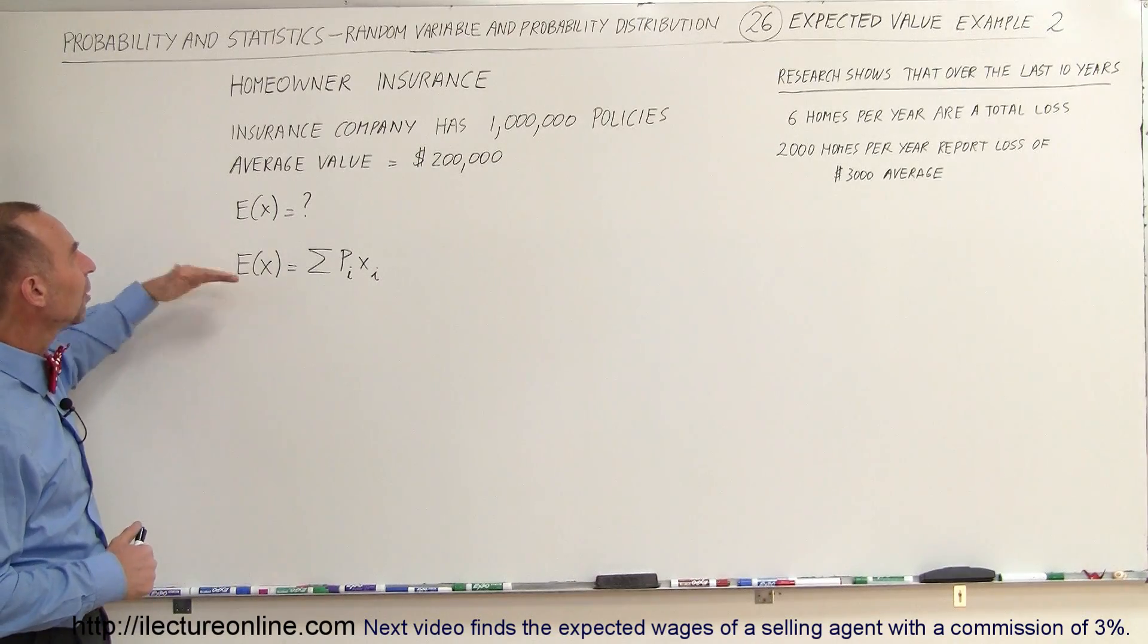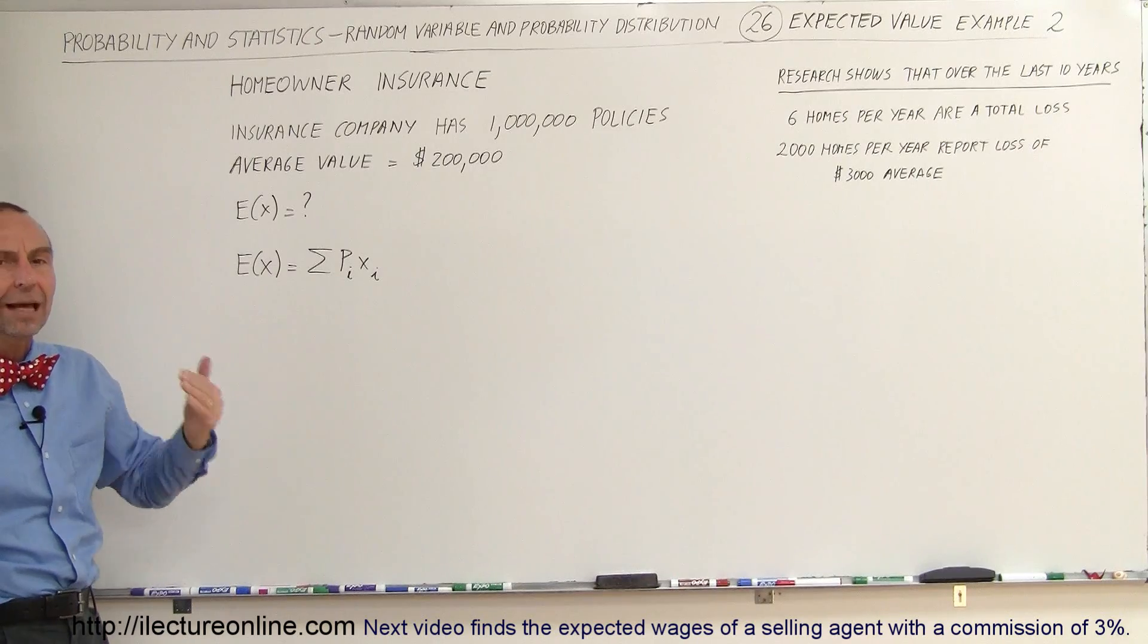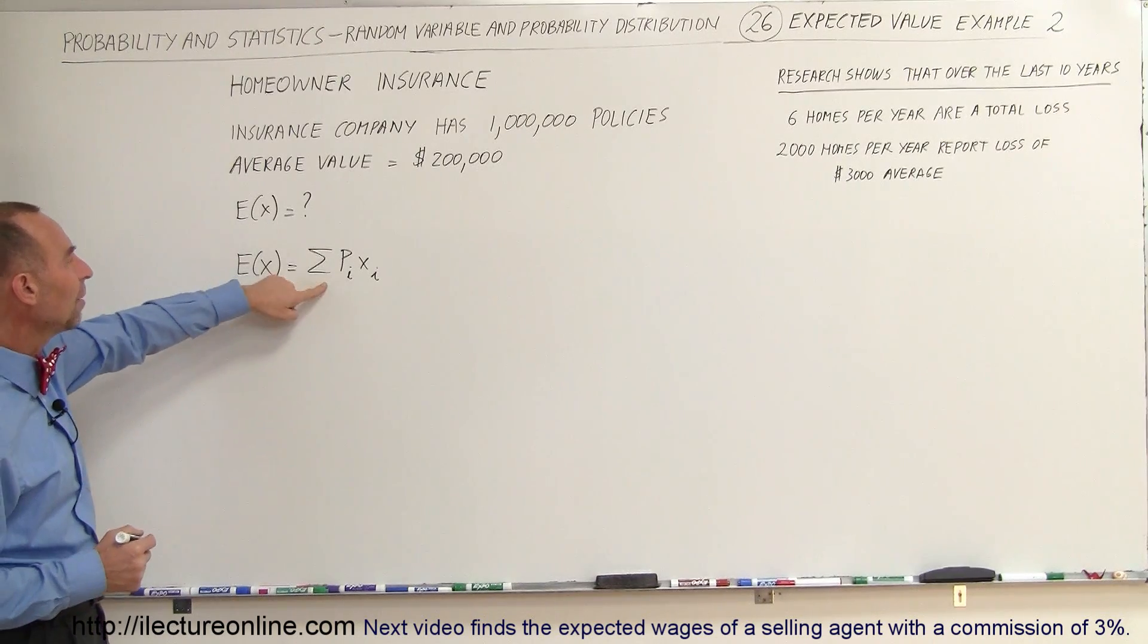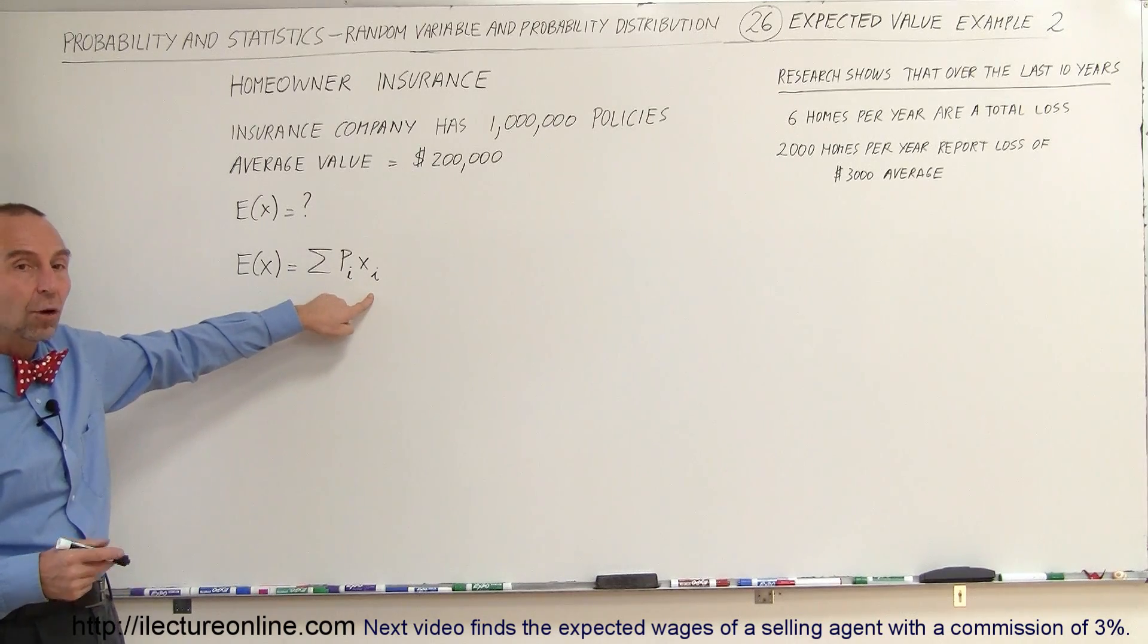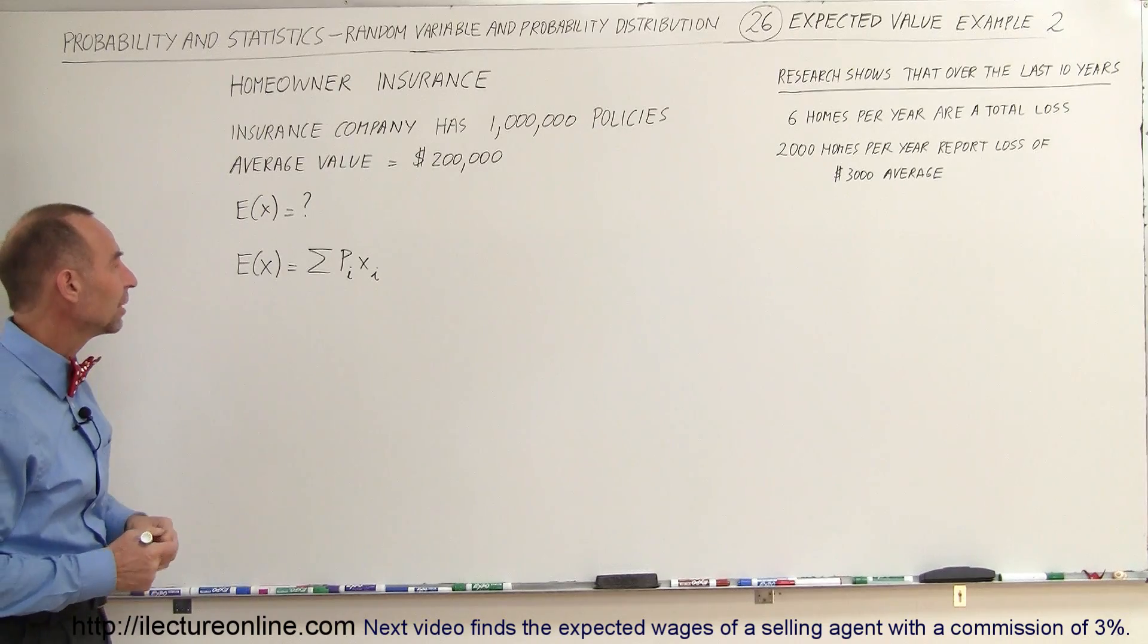So what would be the premium, the minimum premium for the company to break even, not including their expenses and so forth? The expected value is simply the sum of the probability of occurrence times the cost or the benefit, meaning the premium that they would receive from the homeowners.